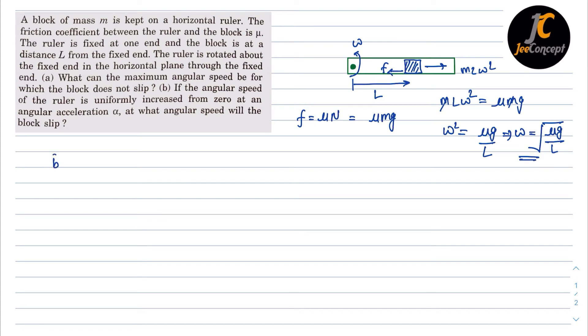Now for b part, the angular speed of this ruler is uniformly increased from 0 at angular acceleration alpha. So that means in this particular case, this is the ruler, the object is placed here.